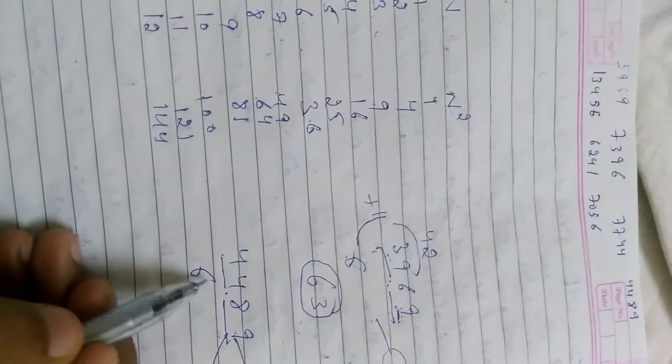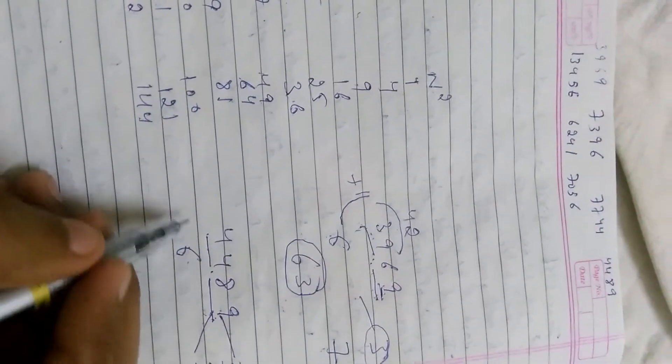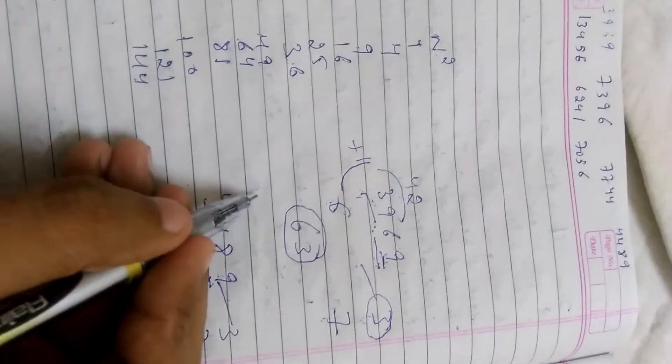So if it is 6 square, then we write 6 plus 1, which is 7. 7 into 6 is 42. Again 42.